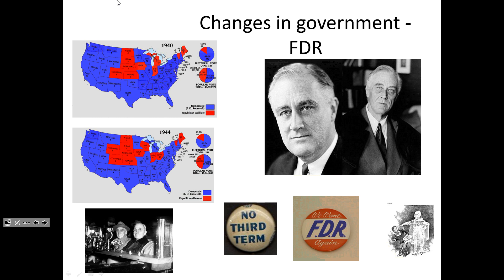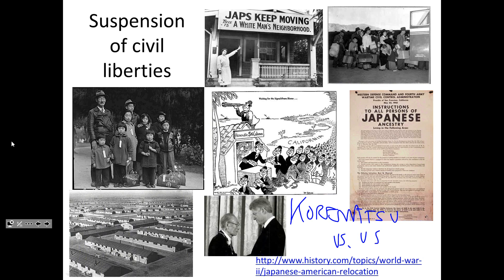Well, after the war, we passed the 22nd Amendment — two plus two is four terms, and you're not allowed to serve four terms anymore. So it put to law what Washington had put as precedent. Another change in government was the way we suspended civil liberties again. We had done the same thing during World War I with the Espionage and Sedition Act. There was some anti-German sentiment, but nothing we had done then compared to what we did in World War II.